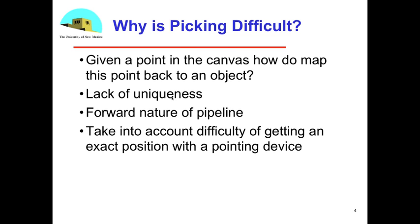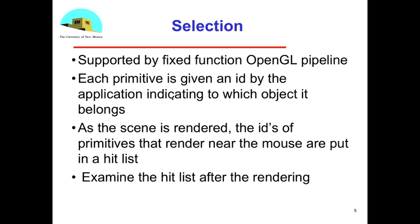Let's start on the first method, which is called selection. It was supported by the fixed function OpenGL pipeline. If you could, in your code when you defined objects, objects comprise a lot of different things - a lot of polygons, triangles, lines, points, potentially. So an object is bigger than a primitive.